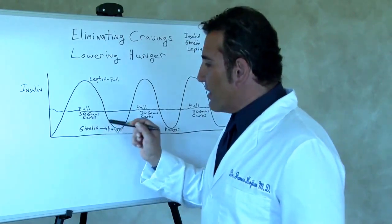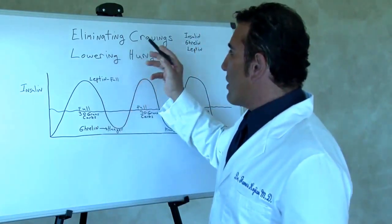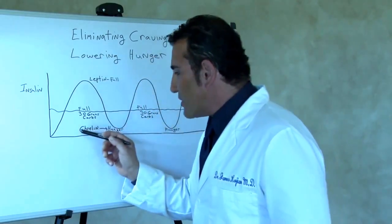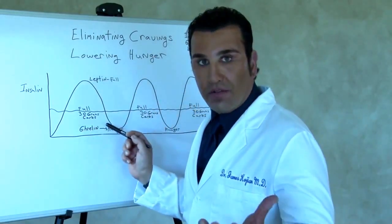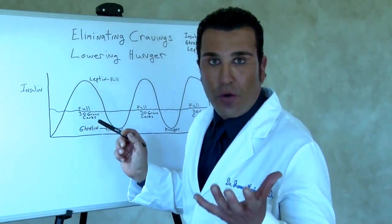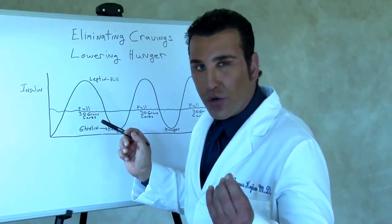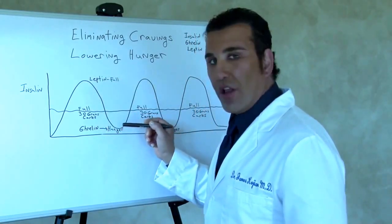So you see, the key to eliminating cravings and lowering your hunger is to decrease your ghrelin level. Ghrelin is the hormone of hunger, and it is triggered when the insulin level comes down very low.